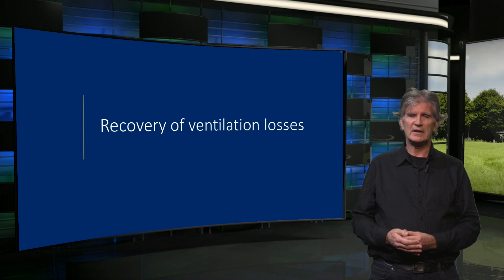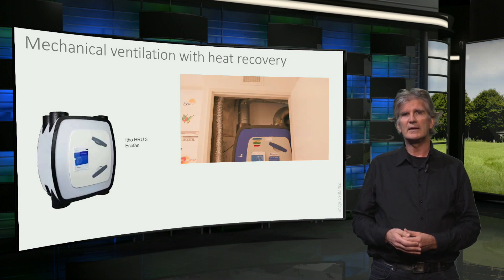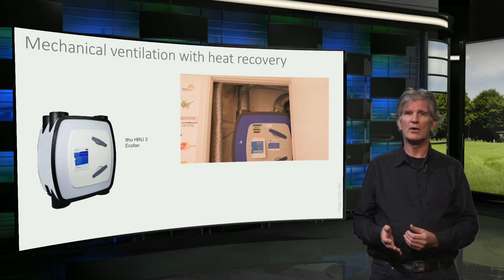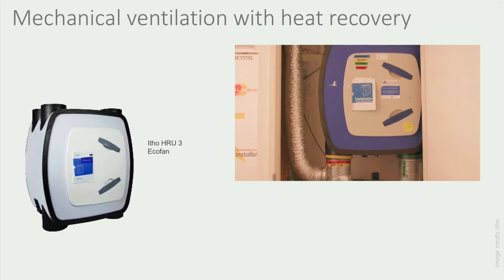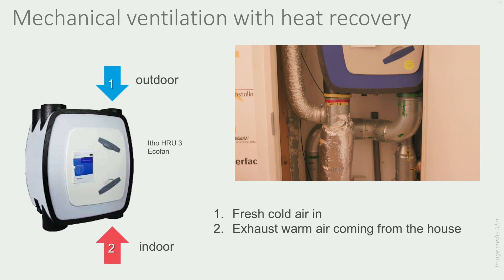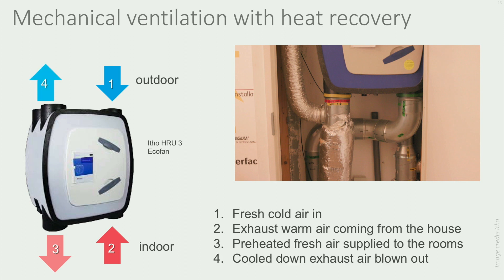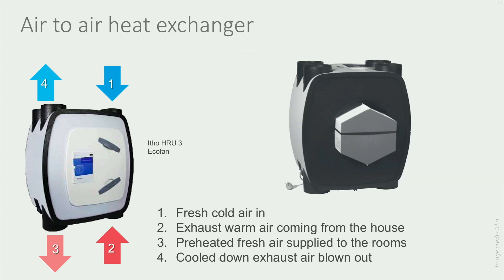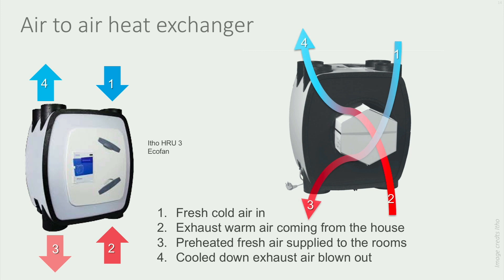Now let's look at the recovery of ventilation losses. It is fairly easy to recover the heat from the exhaust ventilation air when there is a mechanical ventilation system with both mechanical air inlet and outlet. In the Pret-de-Lagé house, a mechanical ventilation box is installed. It has four connections: fresh air coming in, warm waste air coming from the house, preheated fresh air supplied to the rooms, and cooled-down waste air blown out. Inside this box is an air-to-air heat exchanger, where the cold incoming air is preheated by the warm exhaust air.